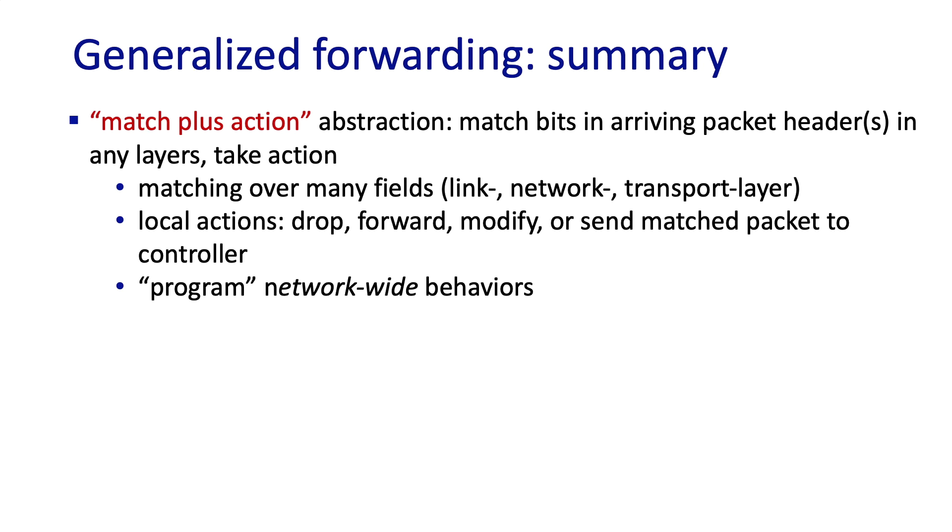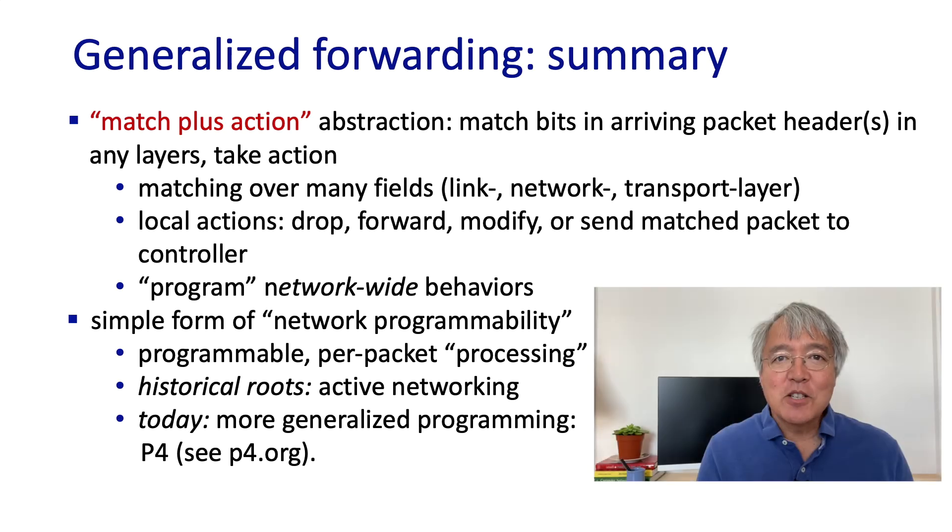Let's summarize what we've learned here about generalized forwarding and match plus action. We've seen that it's possible to match over many fields in the link, network, and transport layer headers. We've seen that the local actions include forwarding packets, dropping packets, modifying header fields in packets, or sending match packets to a controller. These local actions allow for layer 3 routing, layer 2 switching, firewalling, and NAT-like functions all to be accomplished under this single match plus action abstraction. And perhaps most importantly, and sort of giving us a sneak preview ahead into the control plane, we've seen that an SDN controller can effectively program network-wide behaviors like routing by carefully crafting the flow table entries.